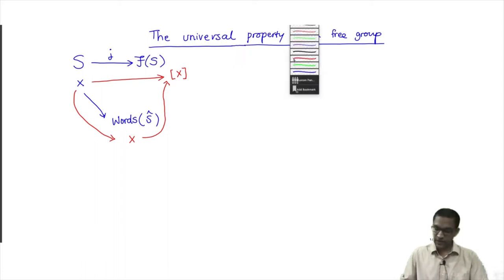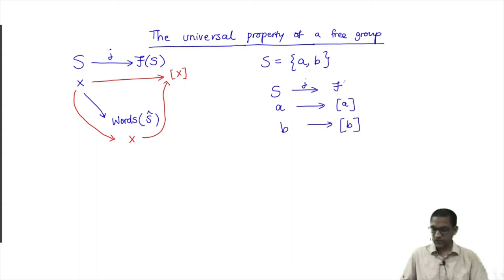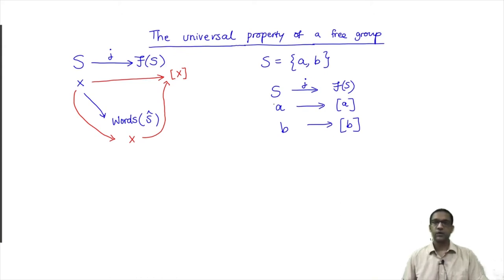If we take the free group on two generators A, B, this natural map just does the following: it takes A and maps it to the equivalence class of A, and B to the equivalence class of B. Observe that S is just a set. F(S) is a group, but from a set to a group you have a function — you really cannot talk about extra properties. For example, if you have a map between two groups, we can talk about homomorphisms, but in this case one of them is just a set. So it is just a map of sets, or in other words, just a function.